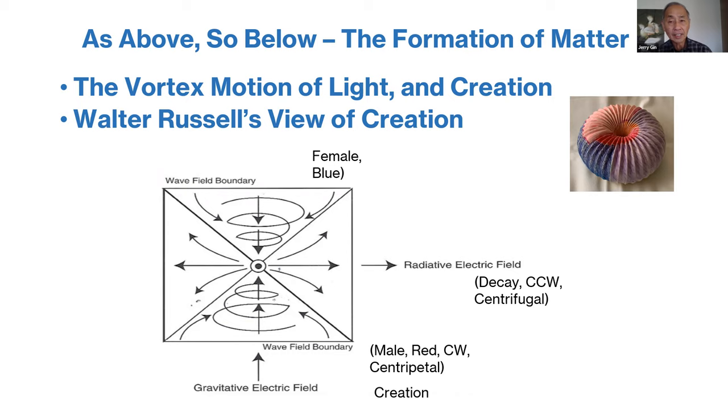It has to do with the formation of matter and creation. The vision he saw was that it is light—two sets of lights in centripetal motion going toward the center. He called that male and female, both in centripetal motion moving toward a center. That is the basis of creation.